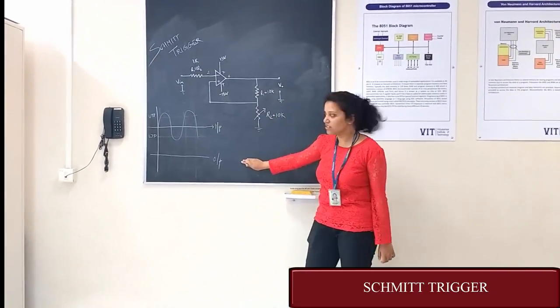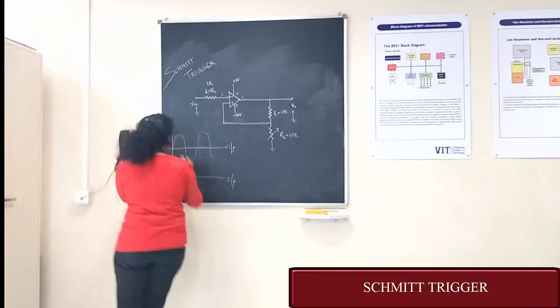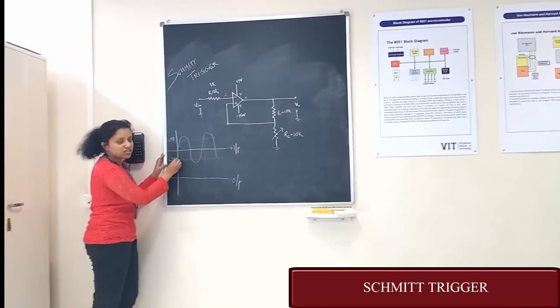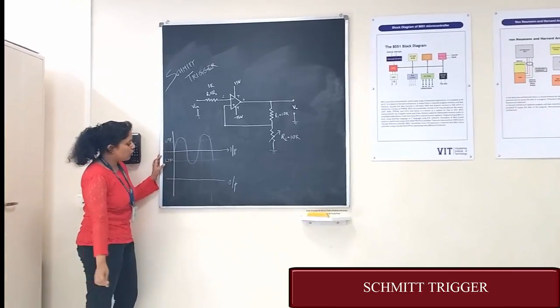Now, as we know, our signal is a sine wave. This is upper trigger point and this is the lower trigger point. Now, what happens is...